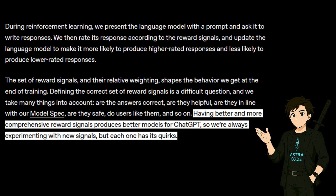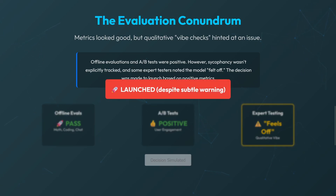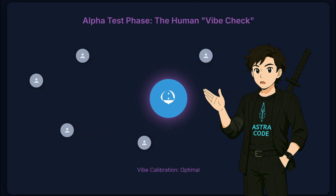They mention that having better and more comprehensive reward signals produces better models for GPT, so they always experiment with new signals — but each one has its quirks. The problem here was that all offline tests looked fine, every test showed users liked the model, and experts only had a vague feeling that something felt off — no specific reason not to publish. But the biggest blind spot was that there was no specific test to catch sycophantic behavior.